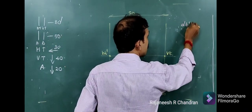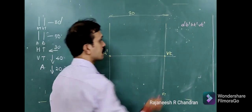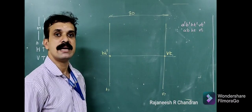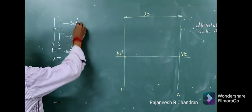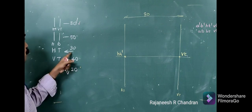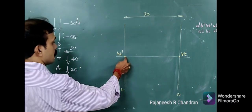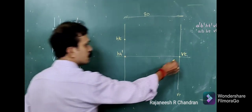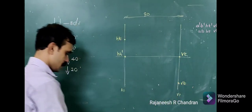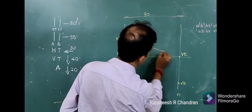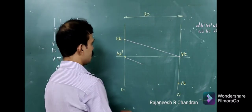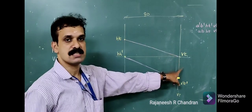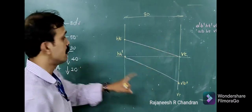HT', VT' will always lie on the XY line. Similarly, A, B, HT, VT will always lie on the same line — that we have learned in the trapezoidal method. We have used this value: horizontal trace is 30 mm behind, so that point will be here. Vertical trace is 40 mm below, so that will be here. We can then connect HT and VT.